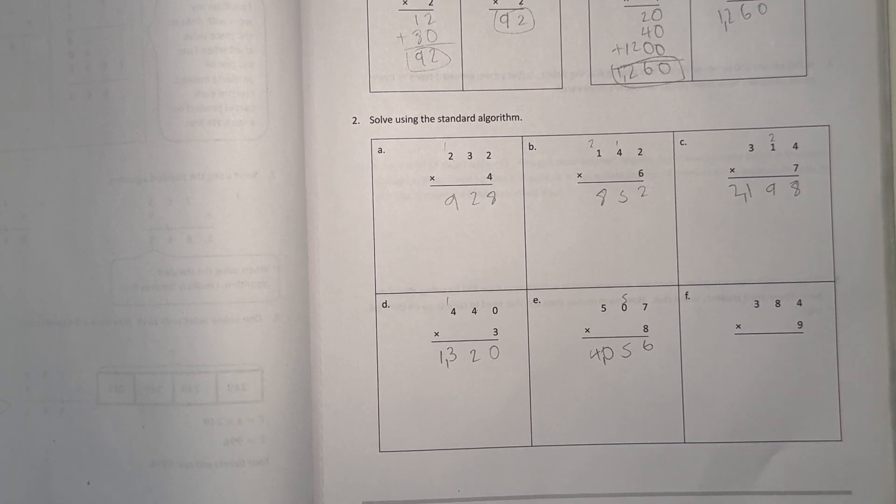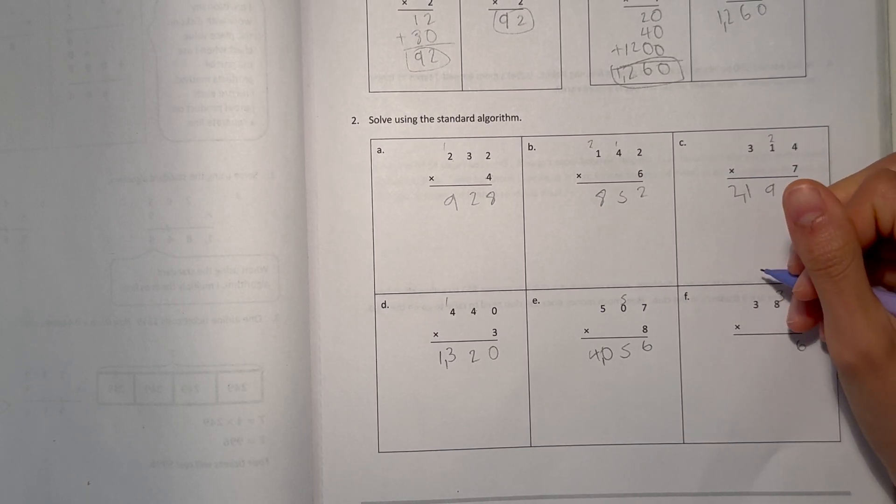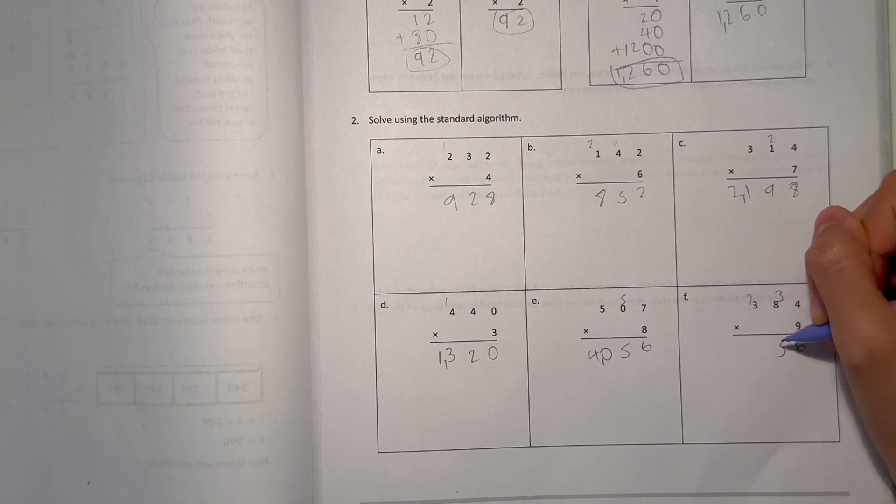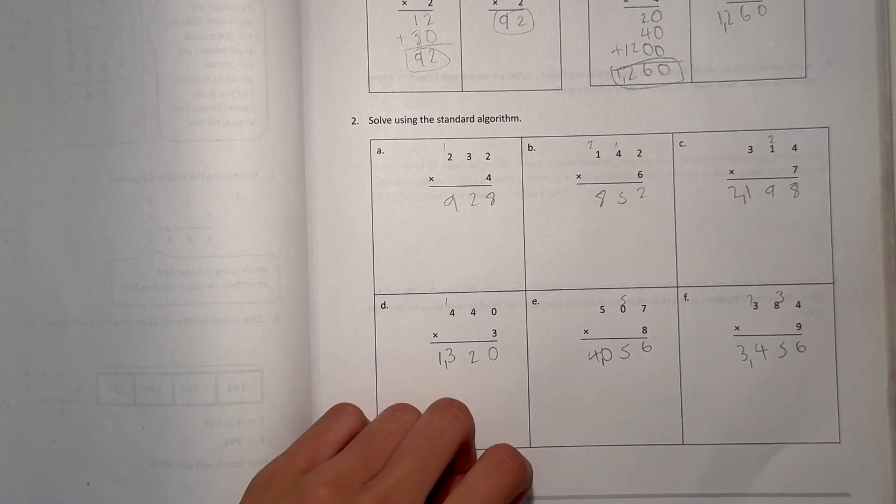F, 4 times 9 is 36, 8 times 9 is 72, plus 3 is 75, and 3 times 9 is 27, plus 7 is 34. So our answer is 3,456.